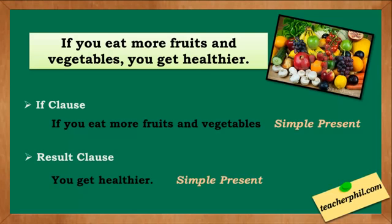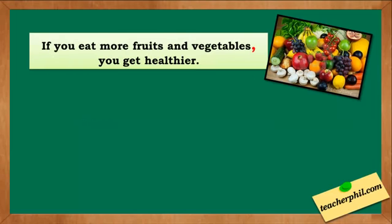This sentence is a fact. The RESULT clause 'you get healthier' happens when the IF clause 'if you eat more fruits and vegetables' is done. Remember, if the IF clause is at the start of the sentence, we put a comma after it. As you've noticed, we put a comma after 'if you eat more fruits and vegetables.'